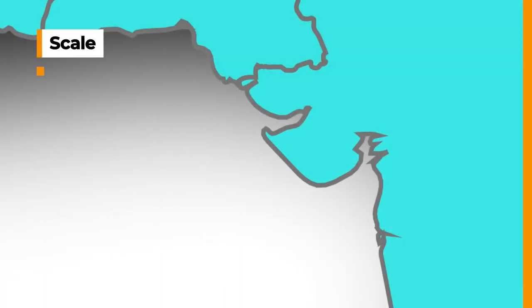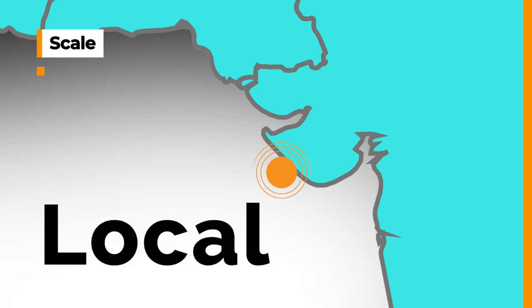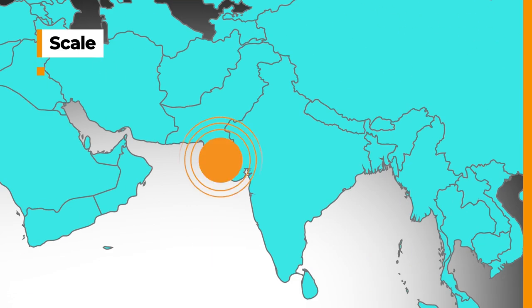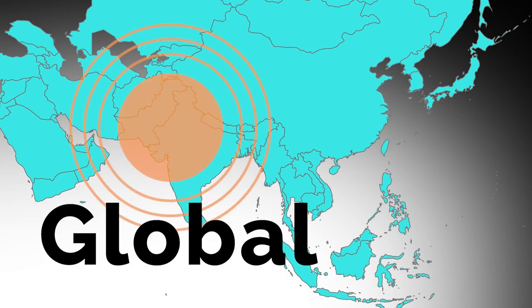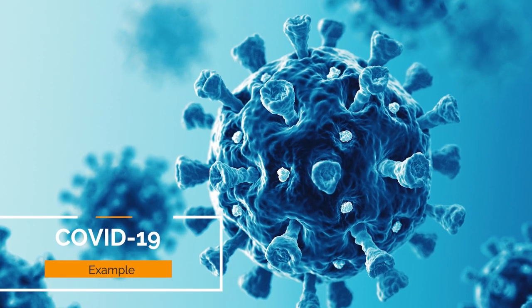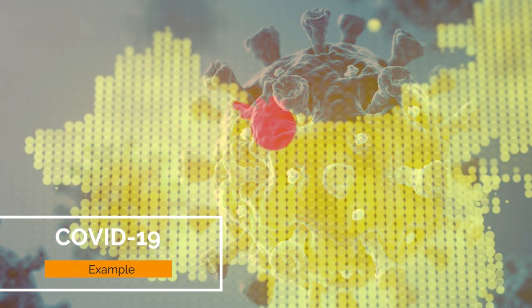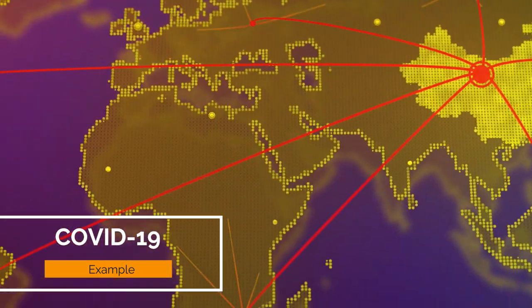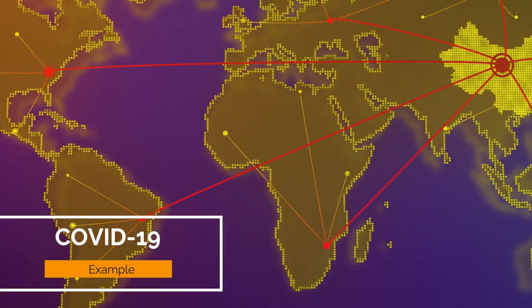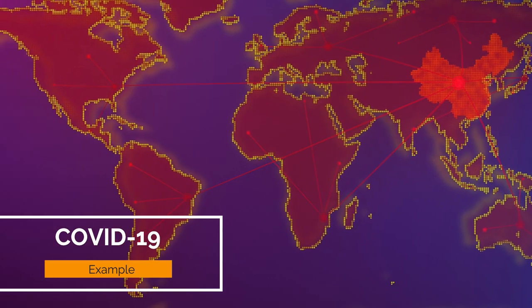Scale is another factor. Disasters can reach various scales of exposure. They can have a small scale, just touching the local level, but may also grow to affect national, regional, and even global levels. For example, COVID-19 started as a local problem, and at that time people would never have thought that the virus would spread globally and change people's lives almost forever.